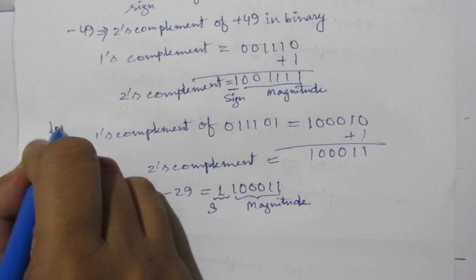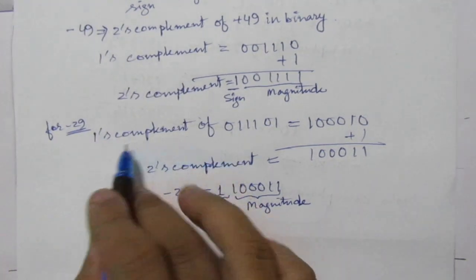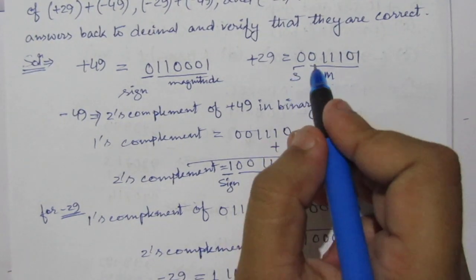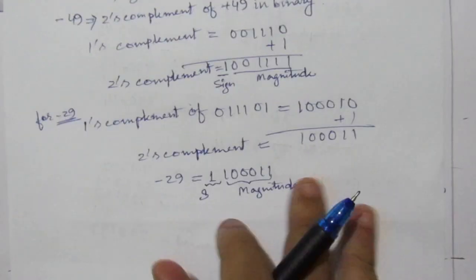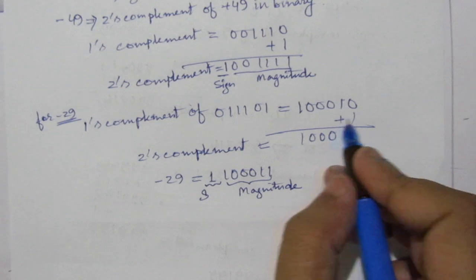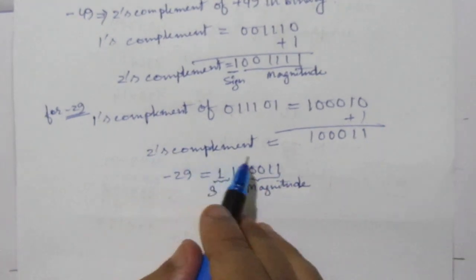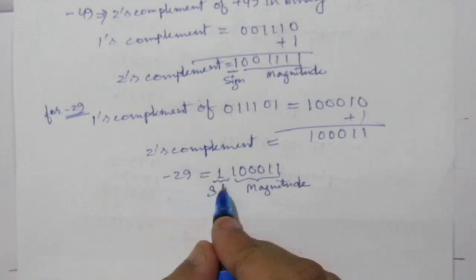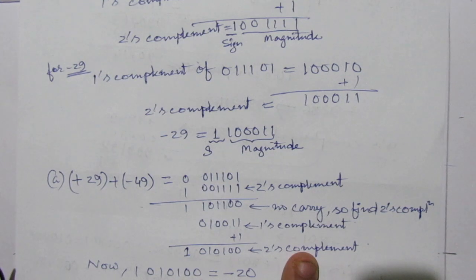For minus 29, we find the 1's complement of +29. The magnitude of 29 is 011101, so its 1's complement is 100010. Then we add 1 to get the 2's complement. Because the number is negative, we put 1 for the sign bit. So now we have the representations for +49, +29, -29, and -49.